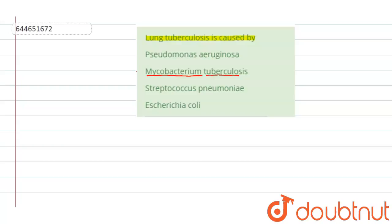Now let us see the first option: Pseudomonas aeruginosa. This particular bacterium is responsible for causing urinary tract infections and respiratory tract infections.